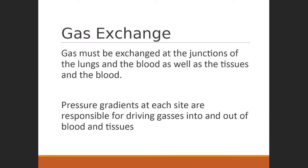Gas exchange at the lungs is what most people are familiar with: you're exchanging gases with the air you ventilate into and out of the lungs. You breathe in air rich in oxygen, absorb that oxygen across the respiratory membrane, carbon dioxide moves in the opposite direction, and when you exhale you expel carbon dioxide-rich air. But we also get gas exchange at the tissue level — we need to get oxygen out of the blood and into the tissue where cells can use it, and pick up carbon dioxide produced in the tissues to bring it back to the lungs.